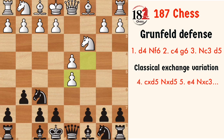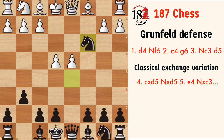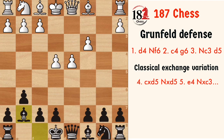The mainline continues with Nxd5, and now white plays e4, taking the full center. Black's main idea in this opening is to capture on c3, and when white captures back, black plays Bg7, aiming at the center. Later, black will generate counterplay by attacking white's center, which he allowed white to build.